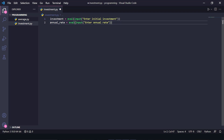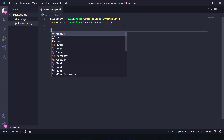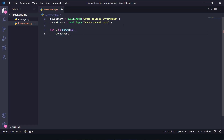We took two inputs. Now we have to implement them in the formula: investment = investment * (1 + annual_rate). The twist is we need to compute this for 10 years. To do that, we use a for loop that runs 10 times: for i in range(10). Inside the loop we implement the formula: investment = investment * (1 + annual_rate).